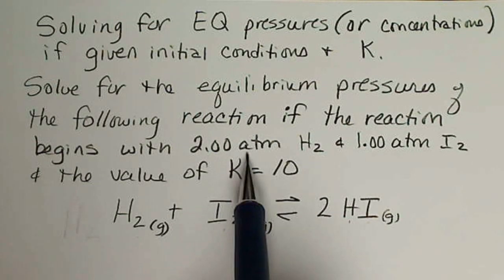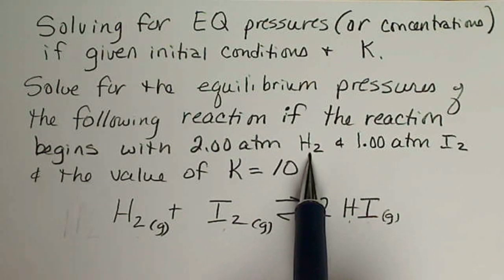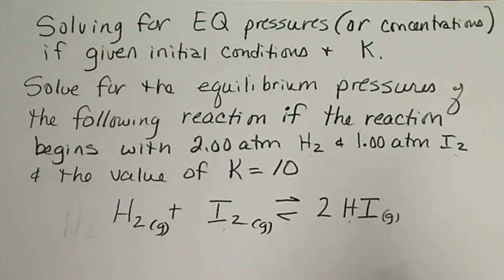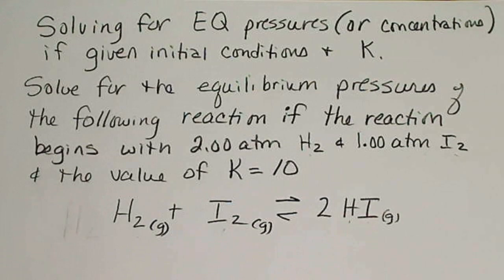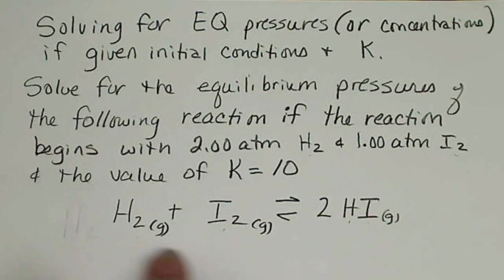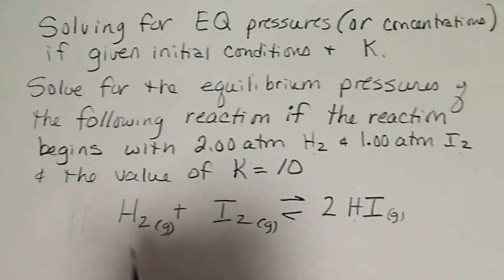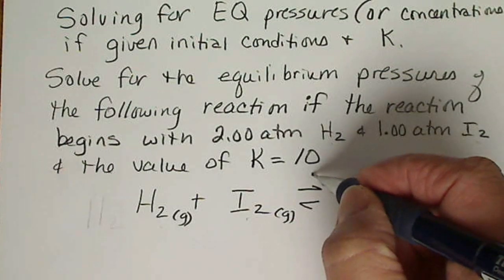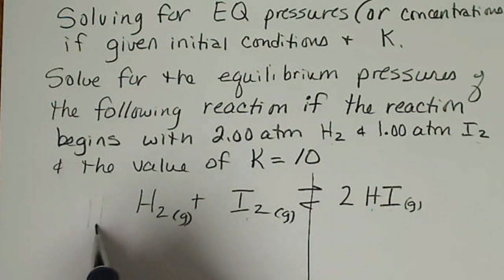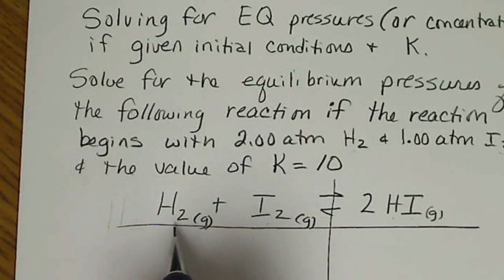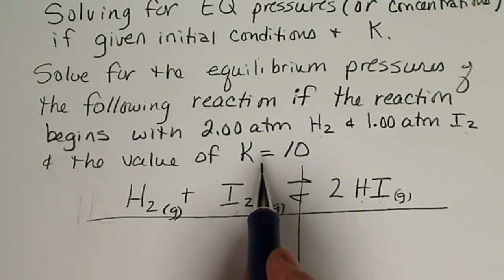We're told that we start the reaction with 2 atmospheres of hydrogen and 1 atmosphere of iodine, and the equilibrium constant is given. So we're going to set up a table, and keep in mind that if we start out with only reactants, as we do in this case, the reaction has to proceed in the forward fashion.